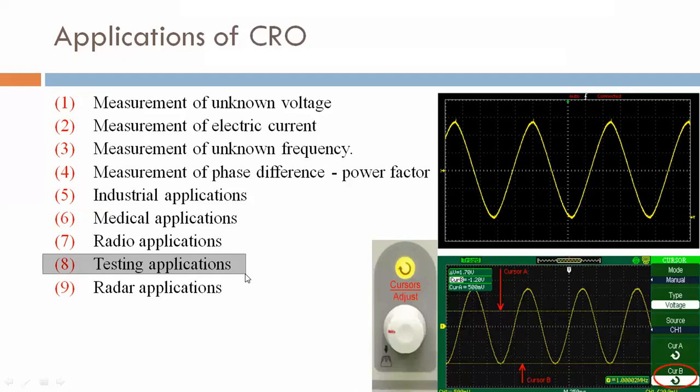Ninth, radar applications. CRO is used in radar applications for targeting in airplanes, missiles, tanks, and similar systems. So this is the application of CRO and block diagram of CRO.